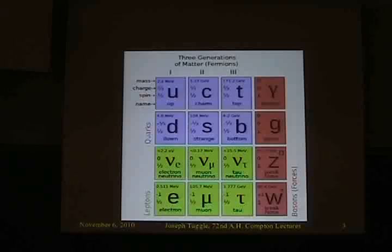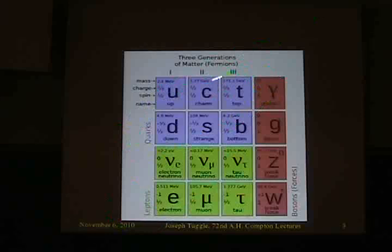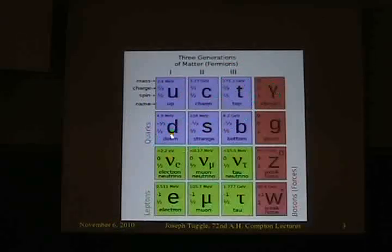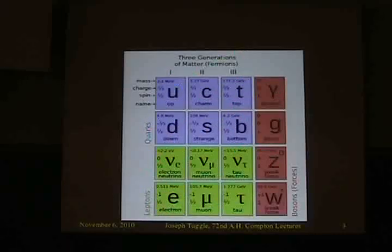The Standard Model has 12 fundamental particles divided into quarks and leptons. The color coding shows quarks at the top — responsible for nuclear matter — and leptons below, which include the electron. And then the last bit is the force carriers. We see three columns of matter, and what distinguishes these columns is really only the mass.